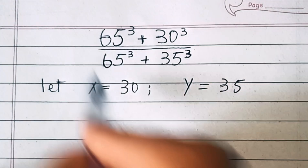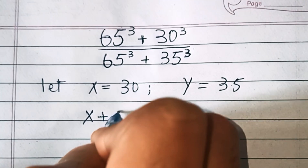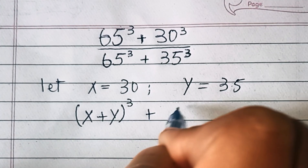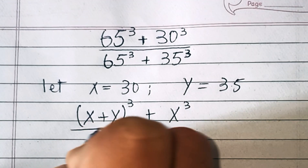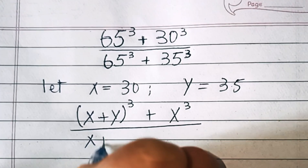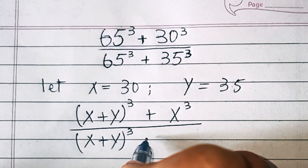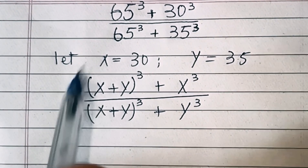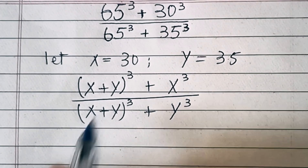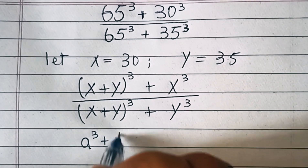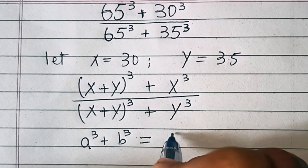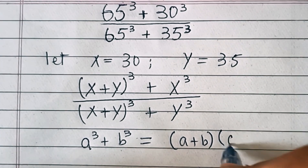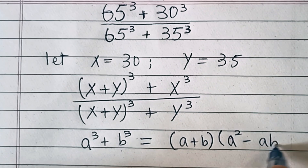In the next step we can write this expression as (x+y)³ + x³ over (x+y)³ + y³. The expression in the numerator and denominator is of the form a³ + b³, which equals (a+b)(a² - ab + b²).